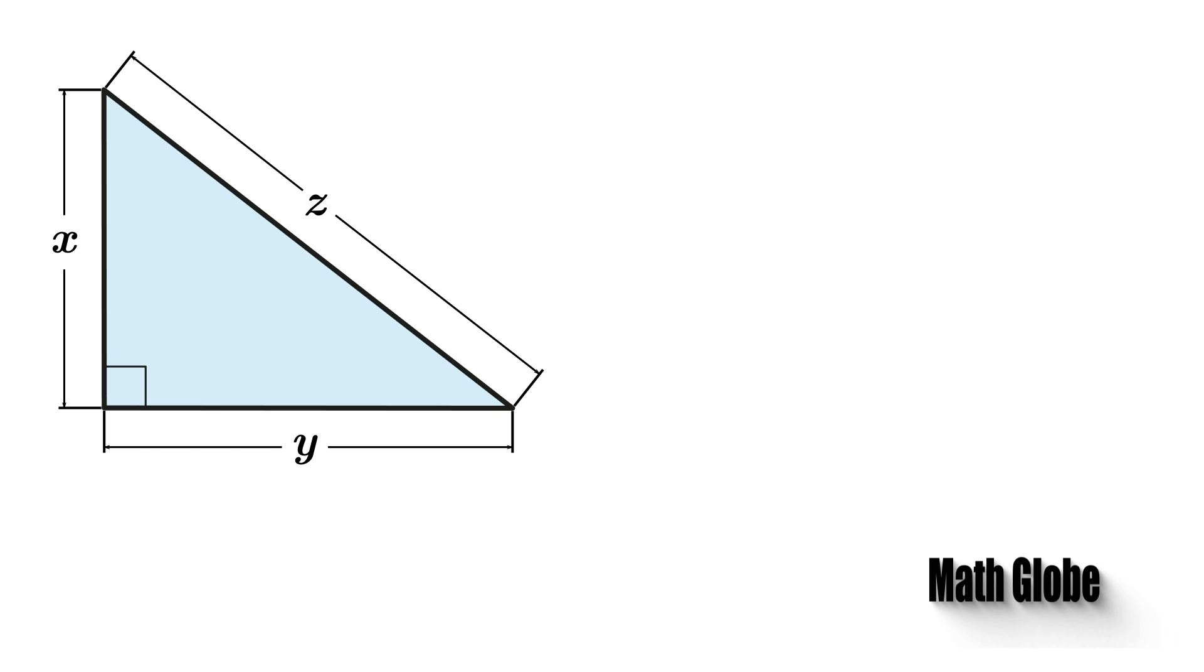Therefore from Pythagoras' theorem, the hypotenuse will be square root of x squared plus y squared.